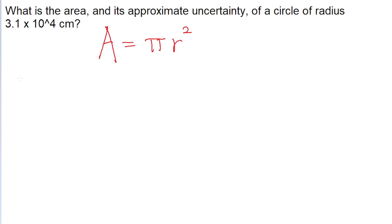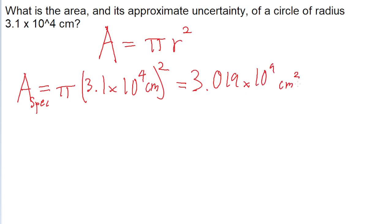So let's take the radius that the problem gives us and plug this into the area equation. So pi times the specified area for the given radius is equal to 3.1 times 10 to the power of 4 centimeters squared. If we put this into a calculator, then we find a specified area of the circle of 3.019 times 10 to the power of 9 squared centimeters.